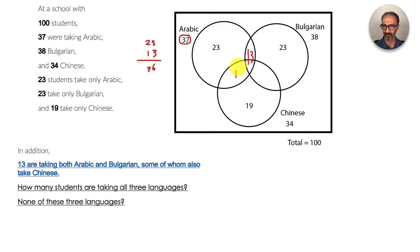We're done with that circle. Let's do the same thing on the right side. I have 23 and 13, which adds up to 36, and the total should be 38. So 38 minus 36, that should be 2. This number should be 2.